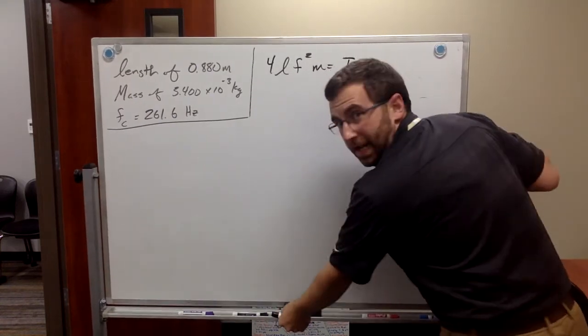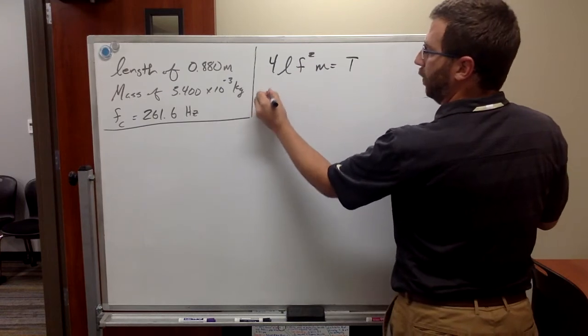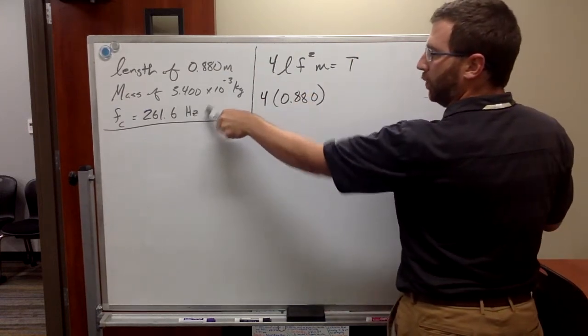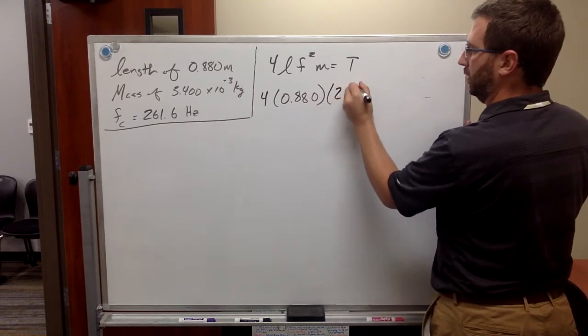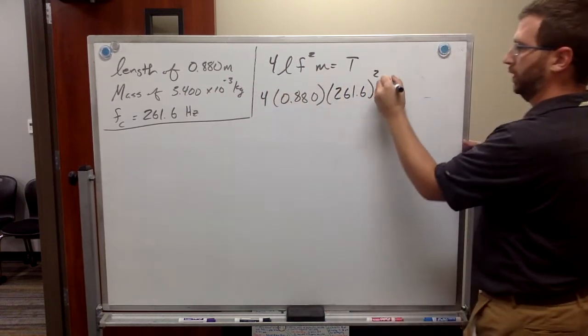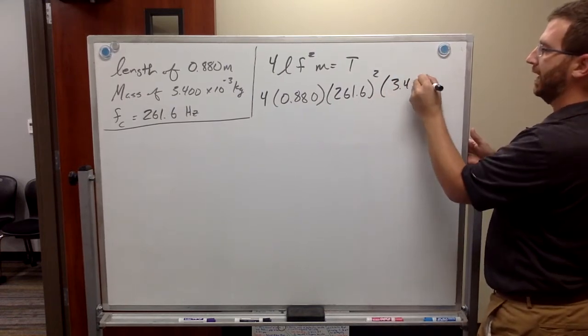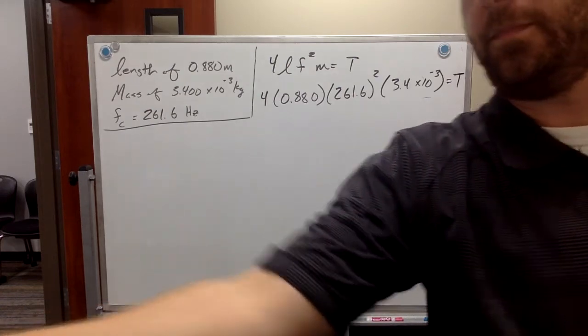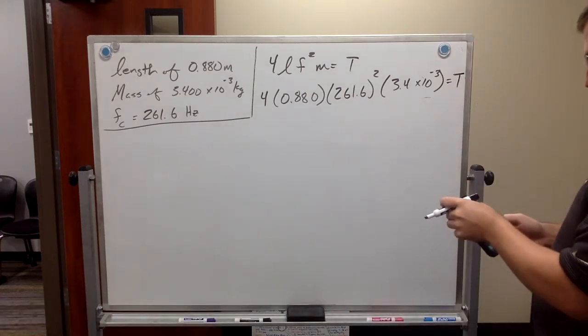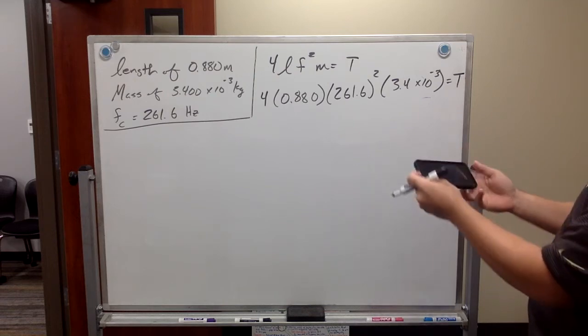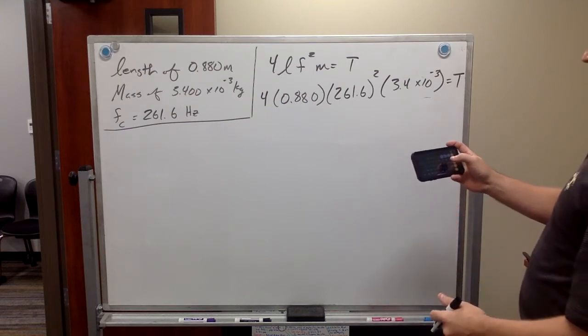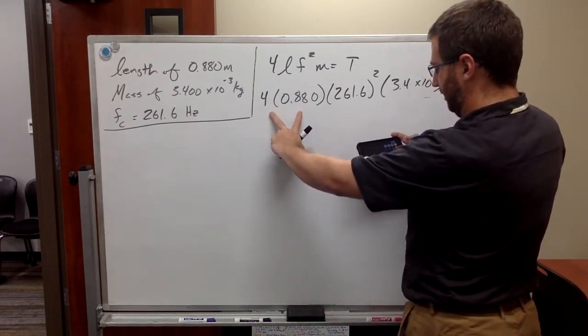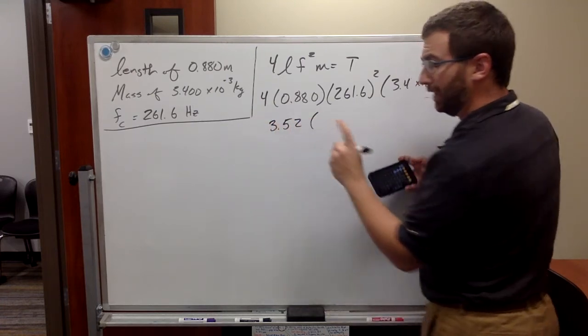So, my equation is 4L F squared M equals T. Now we get to actually put the numbers in. So, we would have 4 times our length, 0.880, times F squared, which is 261.6, squared, times our mass, which is 3.400, times 10 to the minus 3 kilograms. And that would equal our tension. So, we got to be very careful whenever we plug this in. I like to live on the wild side, because I do this on my cell phone. So, 4 times 8. These two guys multiply together. That would give us 3.52. I'm doing this very carefully. 261.6 squared.